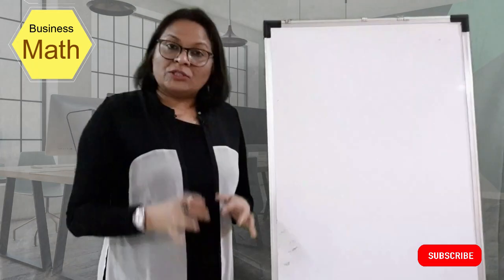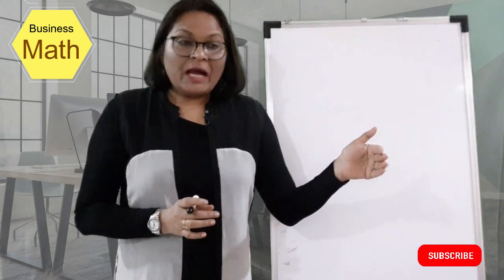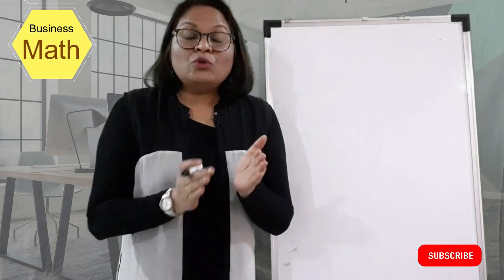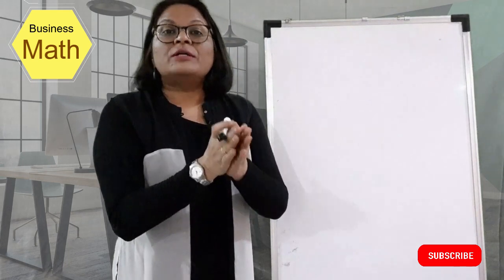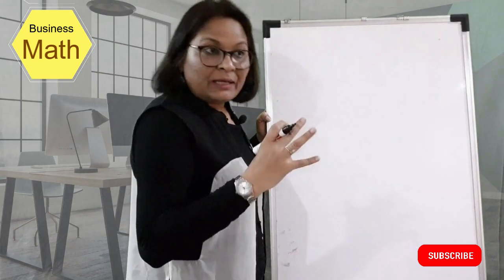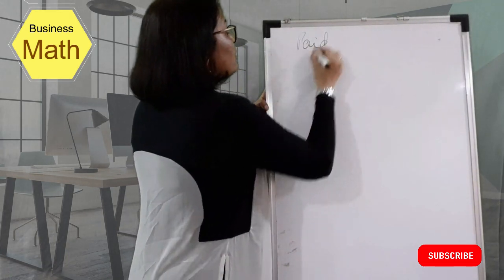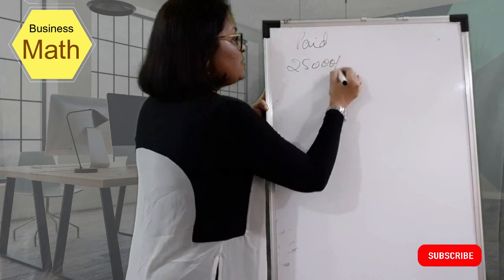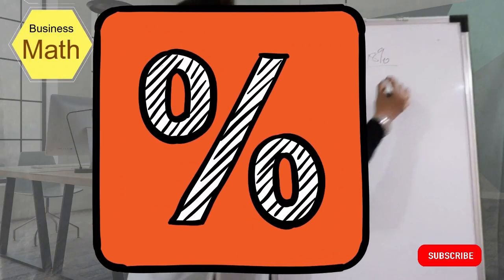Let's start with one simple example. Suppose you buy a product and paid 25,000 rupees after receiving an 18% discount. Now you want to understand what is the MRP of the product and what is the exact amount of discount in rupees that you received. I have taken similar figures to the previous video so you can make an easy comparison.